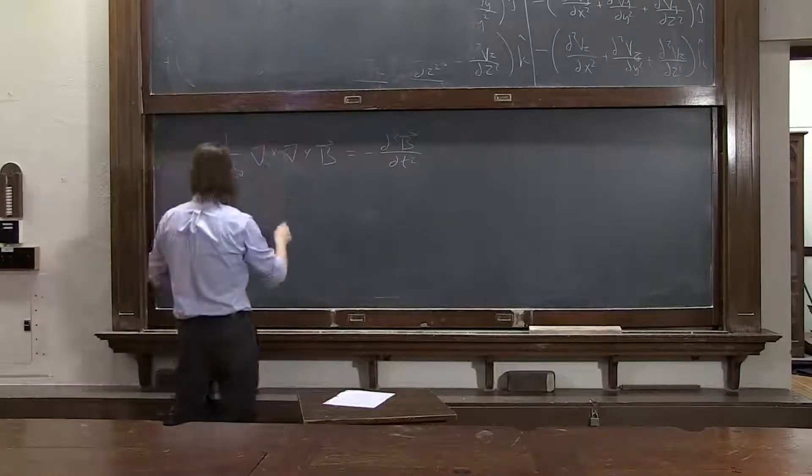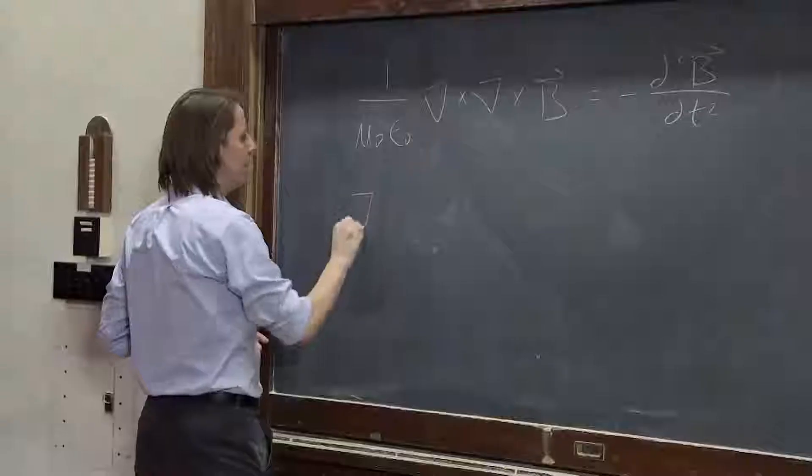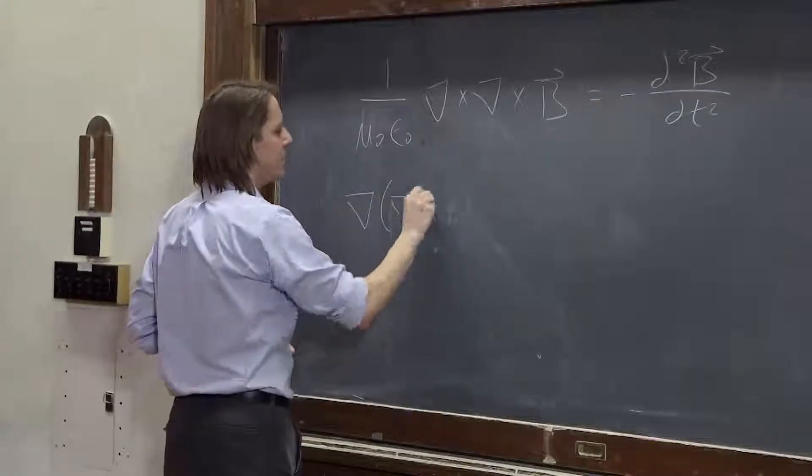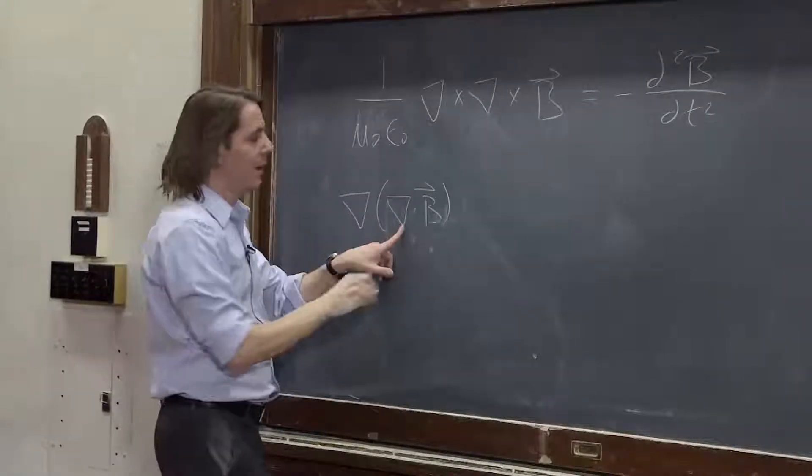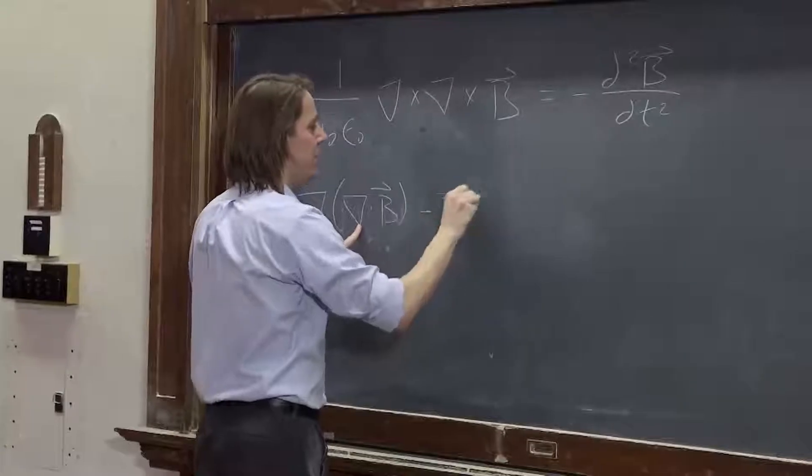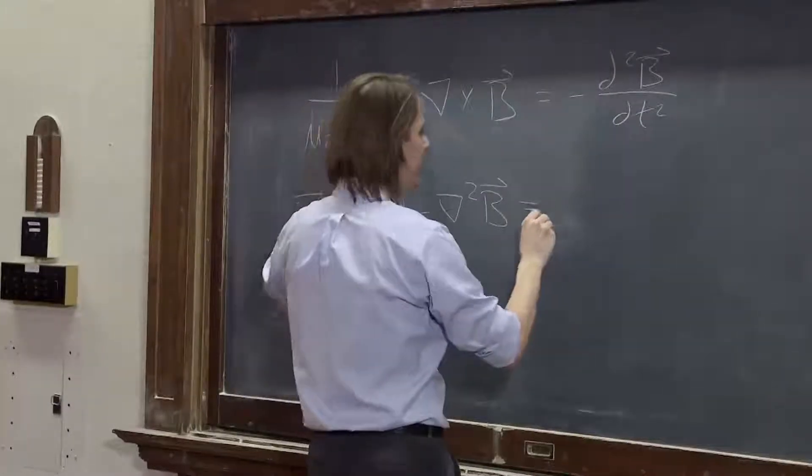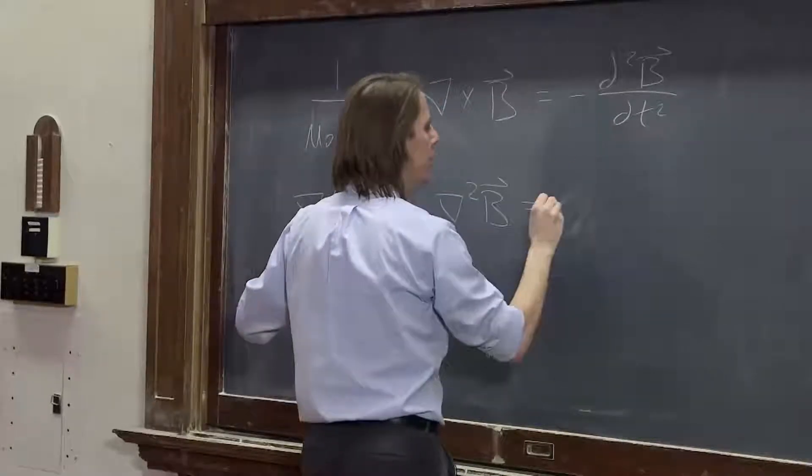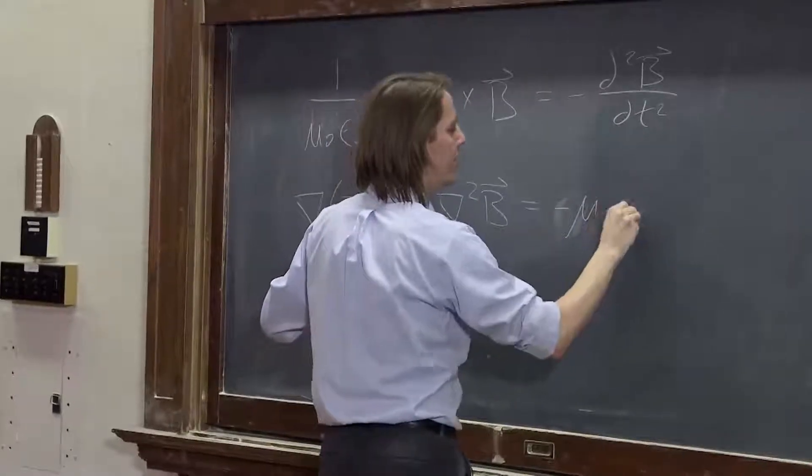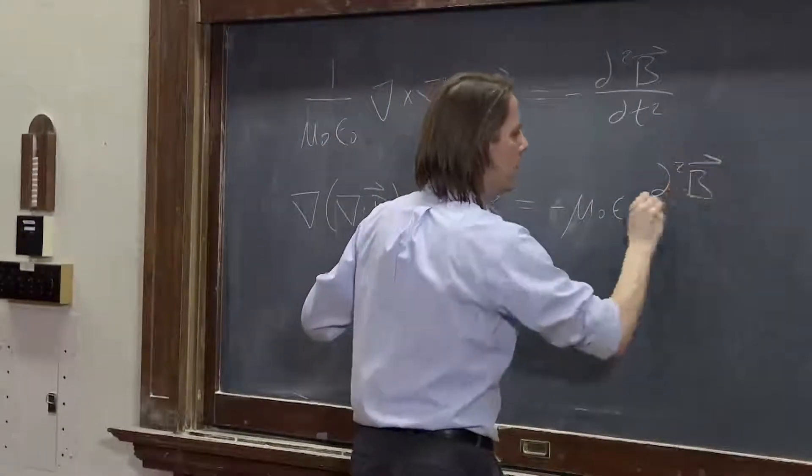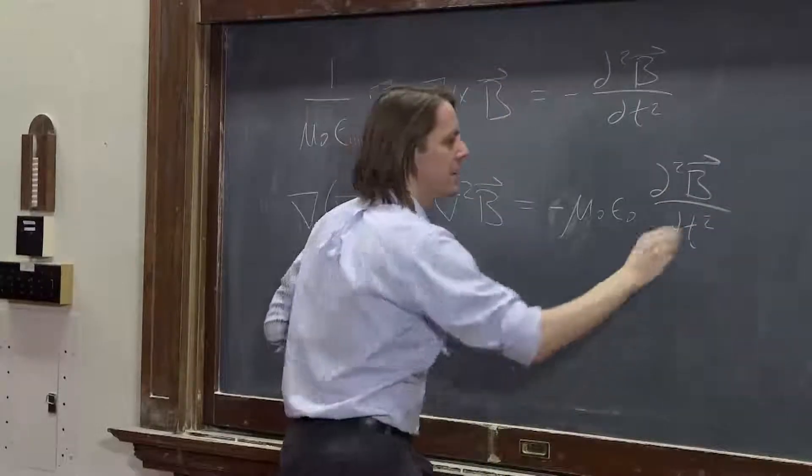Okay, so this then, del cross del cross B, we know is the gradient of the divergence B minus the vector Laplacian of B, that garbage term. And we bring this back over here. So minus mu naught epsilon naught d2B dt2.